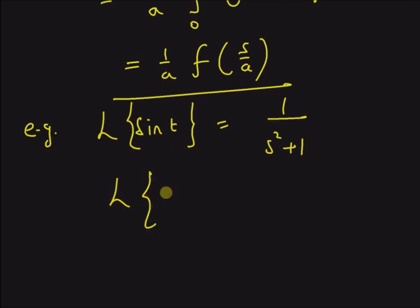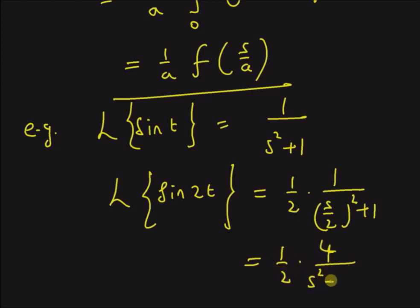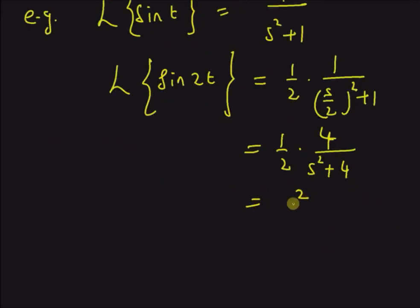Using this, we can find the Laplace transform of a scaled version, sin(2t). By applying the formula with a=2, we replace s with s/2 and multiply by 1/2: (1/2) · 1/((s/2)²+1), which equals (1/2) · (4/(s²+4)), giving us 2/(s²+4).